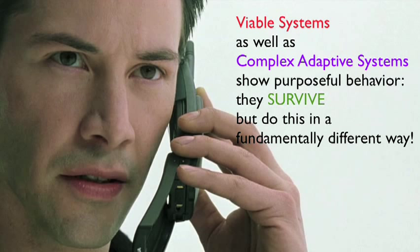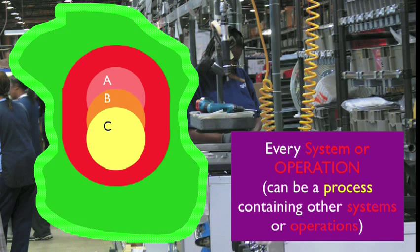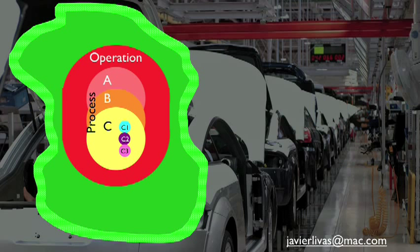Viable systems, as well as complex adaptive systems, show purposeful behavior. They survive, but they do this in a fundamentally different way. The viable system includes an environment, an operation that produces things that are exchanged with the environment, and a management where intelligent decisions are made. Every system or operation can be a process containing other systems or operations. This can go on as long as it is practical to continue making distinctions. System, process, and operations are sometimes interchangeable, and each one has its share of environment and management.